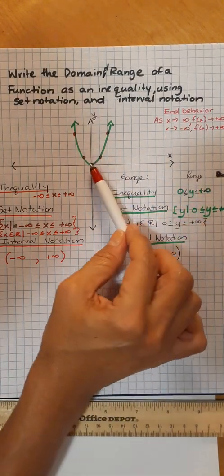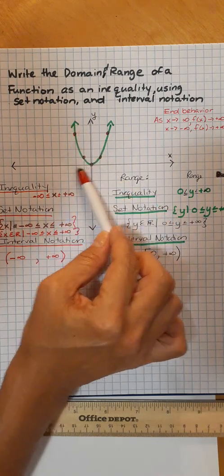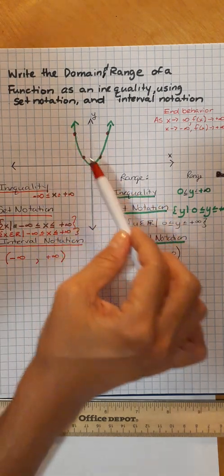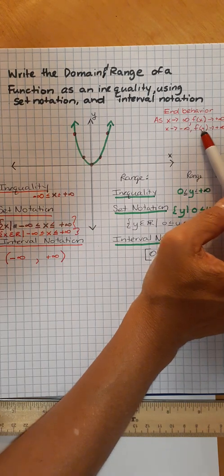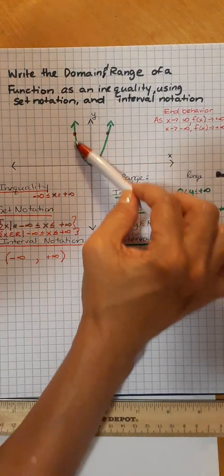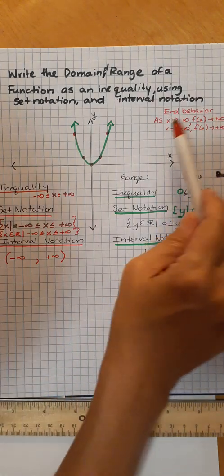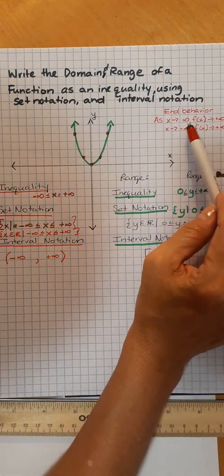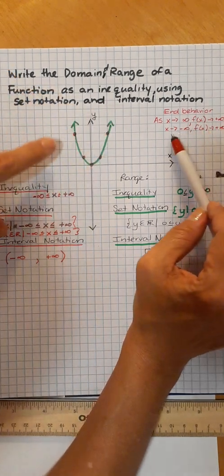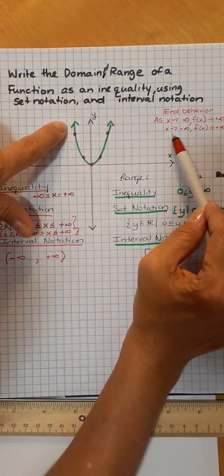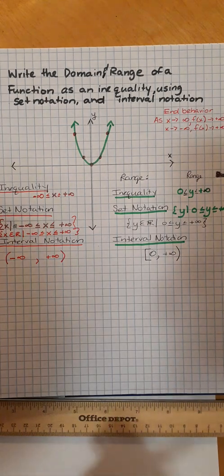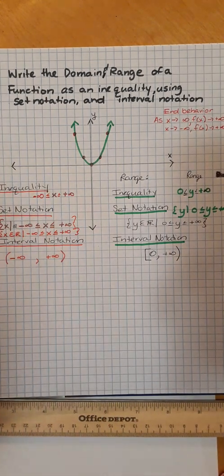And as my x's get smaller — the negative side of the x's — as they get smaller, what's happening to the y's? It's going up. So my f(x) is going towards positive infinity, because it's going up. So my end behavior: as my x is getting larger, my y's are getting larger; and as my x's are getting more negative or smaller, my y's are getting larger, toward positive infinity. That is the behavior of the graph. I hope that helps.